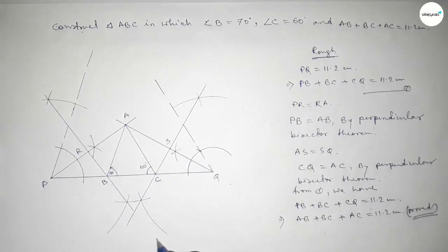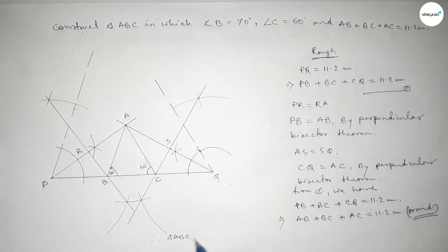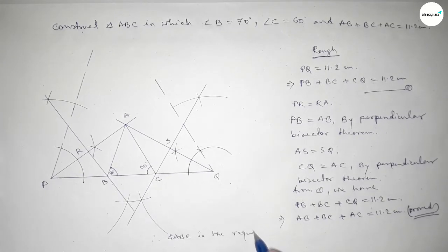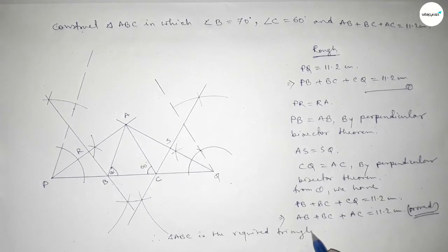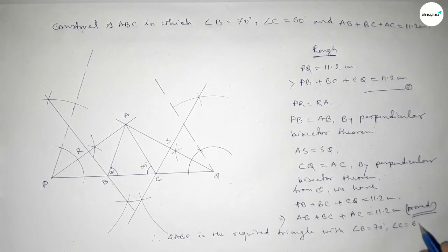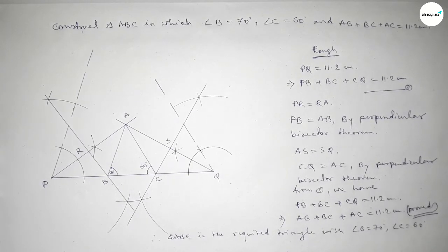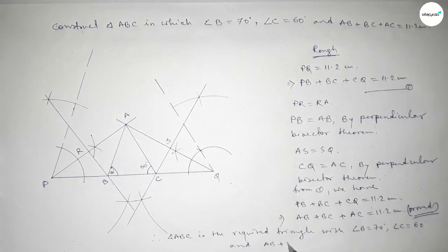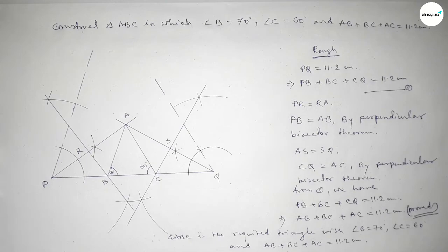Therefore triangle ABC is the required triangle with angle B equal to 70 degrees, angle C equal to 60 degrees, and the sum of the three sides equal to 11.2 centimeters. That's the process to construct a triangle by this method. Thanks for watching, please share it.